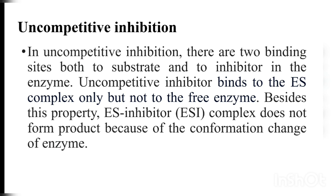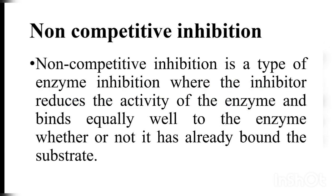In uncompetitive inhibition, the enzyme has two binding sites — one for the substrate and one for the inhibitor. The uncompetitive inhibitor binds only to the enzyme-substrate complex, not to the free enzyme, and the resulting ES-inhibitor complex does not form product due to conformational changes. In non-competitive inhibition, the inhibitor reduces enzyme activity by binding equally to both the free enzyme and the enzyme-substrate complex.